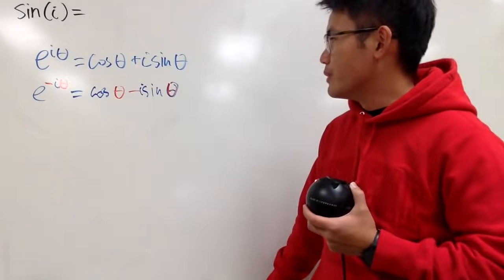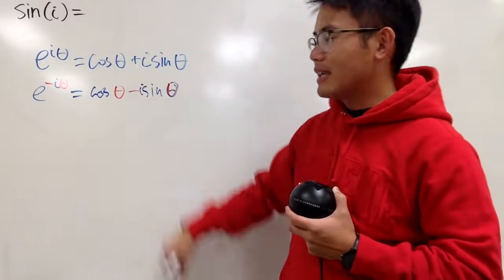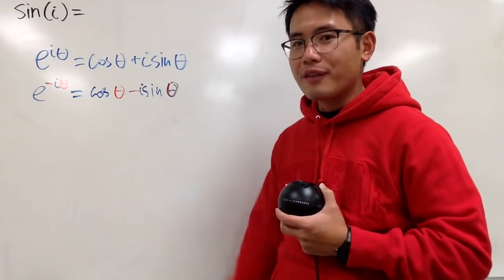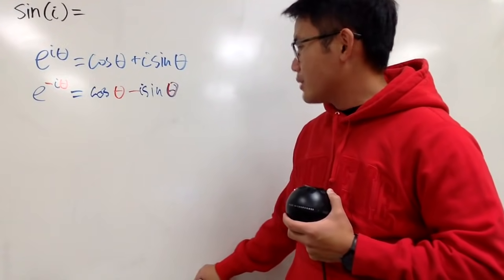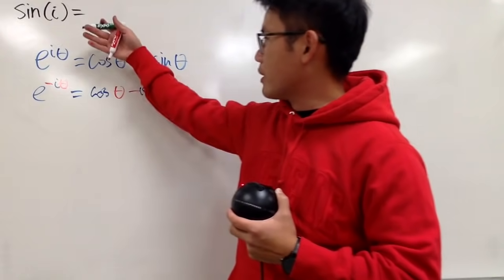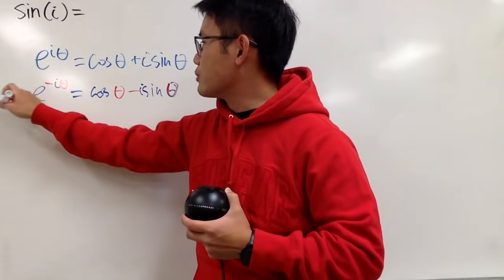And what can we do? I want to find sine. I am not going to add these equations up, because otherwise I will get rid of the sine. That's no good. I am going to subtract the equations, maybe from here to here. So I will subtract the equation.